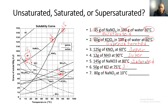Number seven: 80 grams of NaNO₃ at 10 degrees Celsius. If you notice, 80 grams and NaNO₃ at 10 degrees Celsius — this point actually hits right on that line, so that tells us it is saturated.